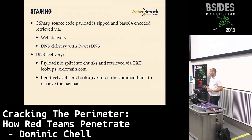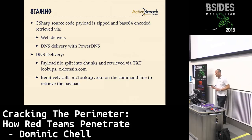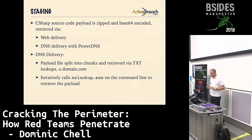Sharpshooter can also work with staging. The stager will retrieve some C-sharp source code that has been zipped and Base64 encoded via HTTP or HTTPS. But it can also do it through DNS using another tool I wrote called PowerDNS. PowerDNS provides a fake DNS server — you tell it any file you want to serve via DNS, it splits the file into chunks, and the payload makes DNS TXT record lookups to download and reconstruct the payload on the client side, iteratively calling nslookup.exe on the command line, because there's no native library in .NET 3.5 for TXT lookups.